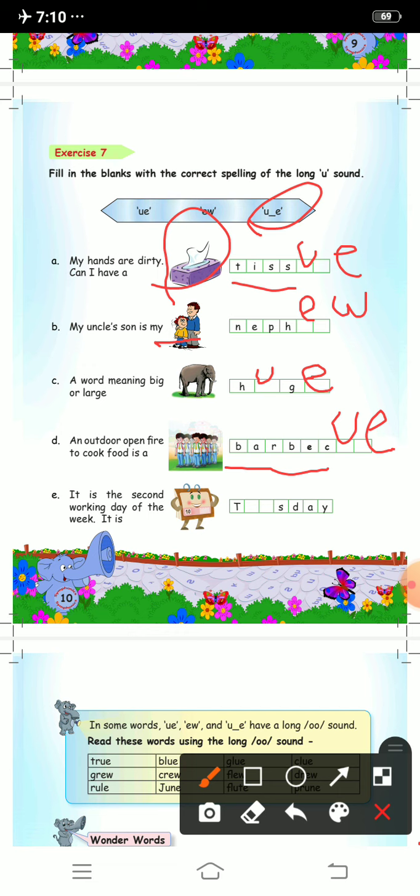It is the second working day of the week. First working day is Monday, so second working day will be Tuesday. Here what will come? U e. So the words are tissue, nephew, huge, barbeque and Tuesday.